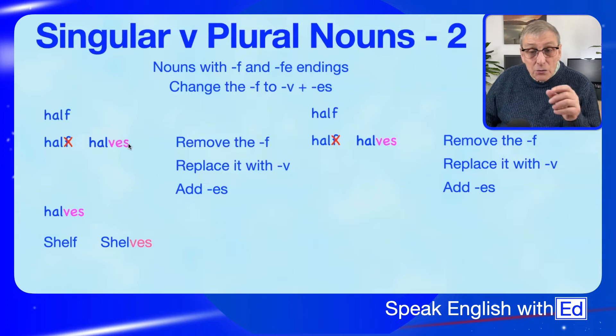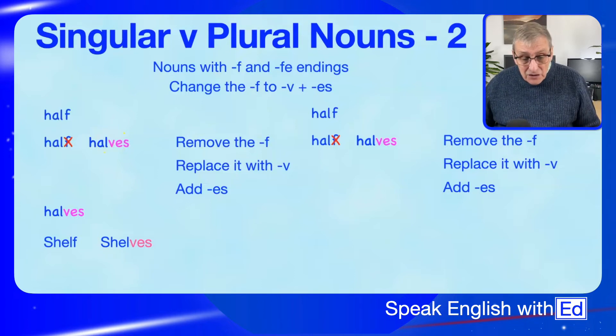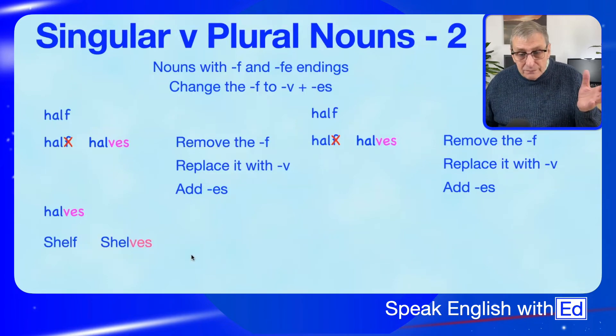This rule also applies to 'shelf.' We remove the F and replace it with a V and add ES, giving us 'shelves.' I really appreciate you watching these videos — check out the other videos on the channel as well. If you haven't already subscribed, hit the subscribe button so you won't miss any new videos.